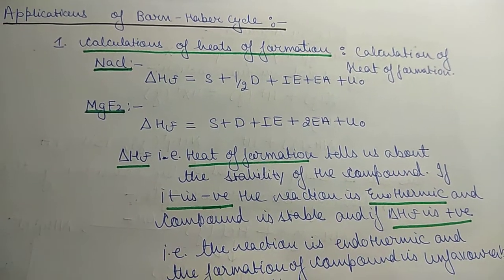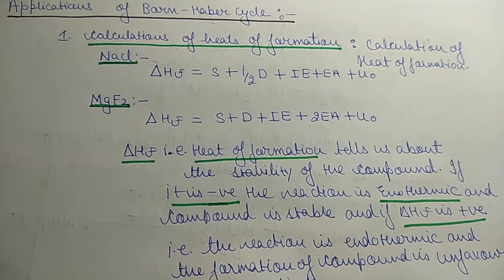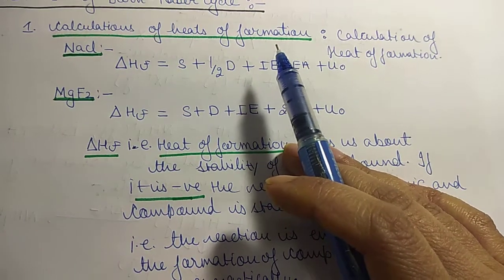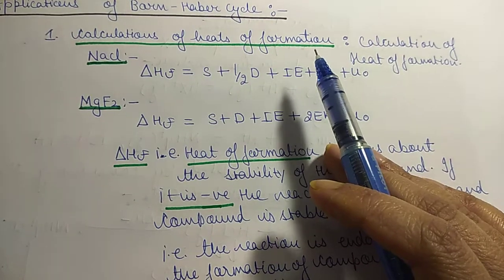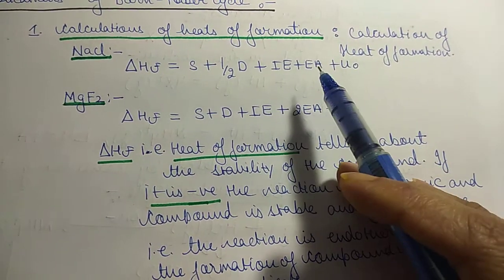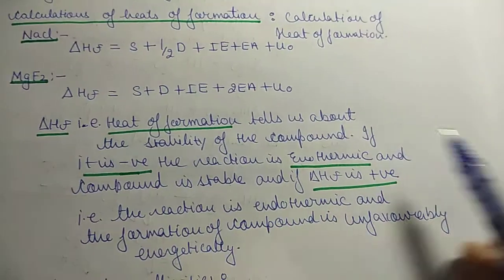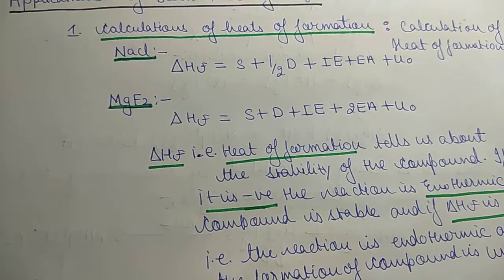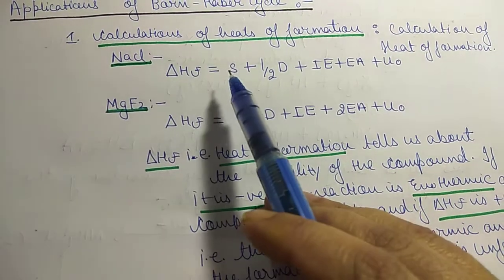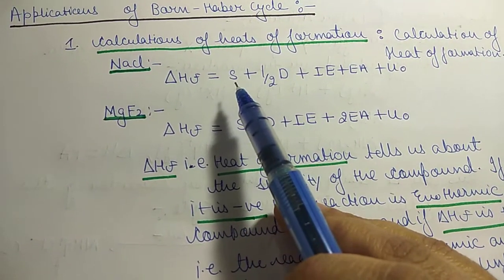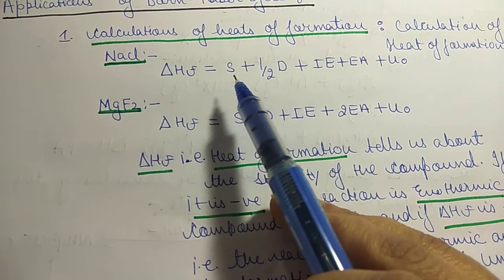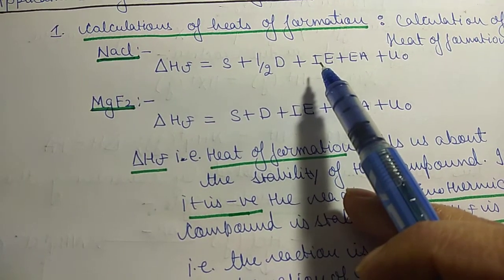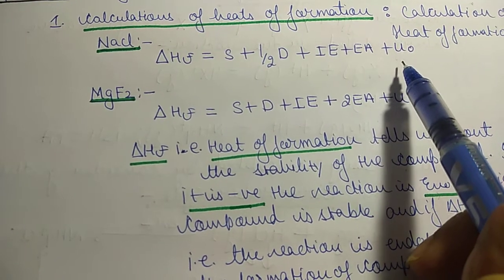We will study applications of the Born-Haber cycle. The first application is calculation of heat of formation. From the Born-Haber cycle we can calculate ΔHf, the heat of formation. For NaCl, ΔHf equals S plus half dissociation energy plus ionization energy plus electron affinity plus U-naught, which is the lattice energy.